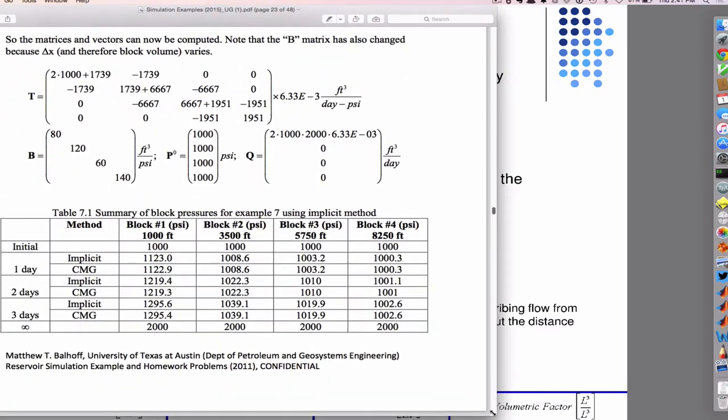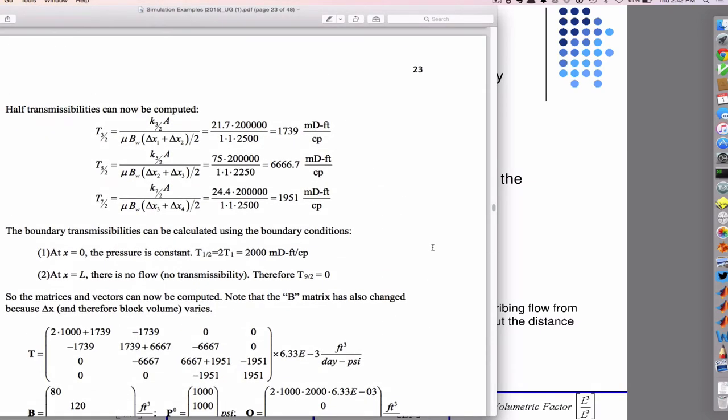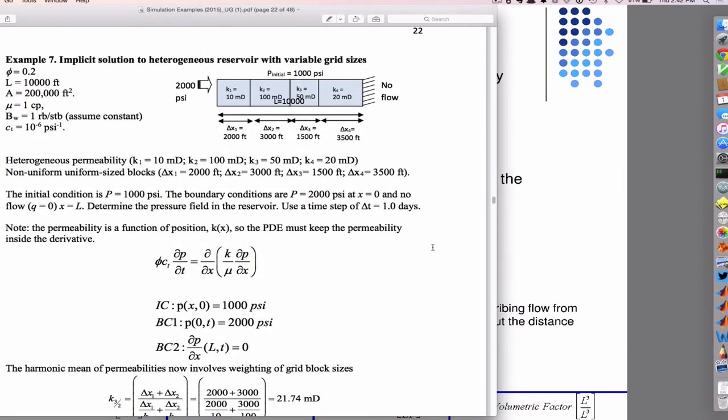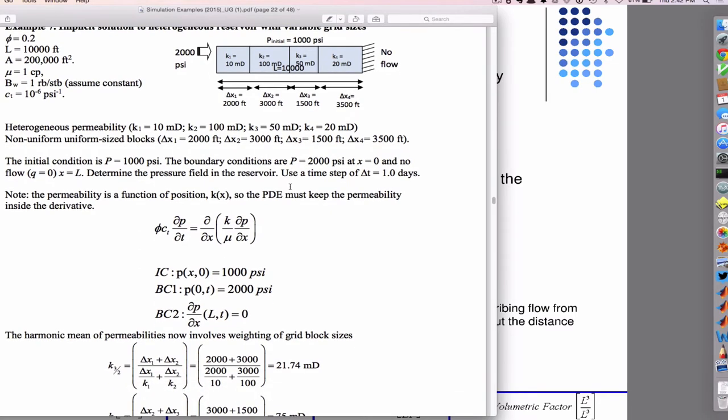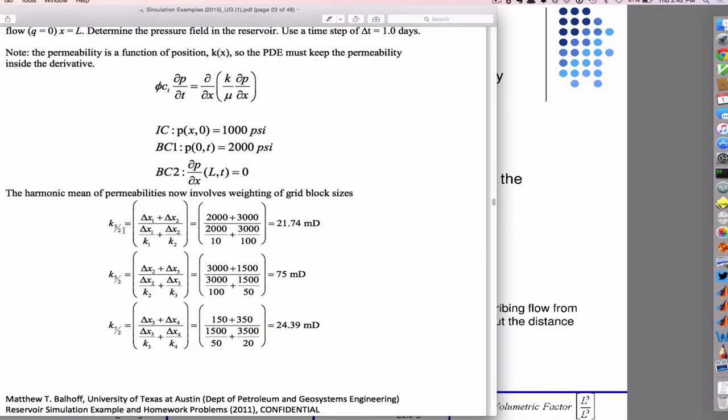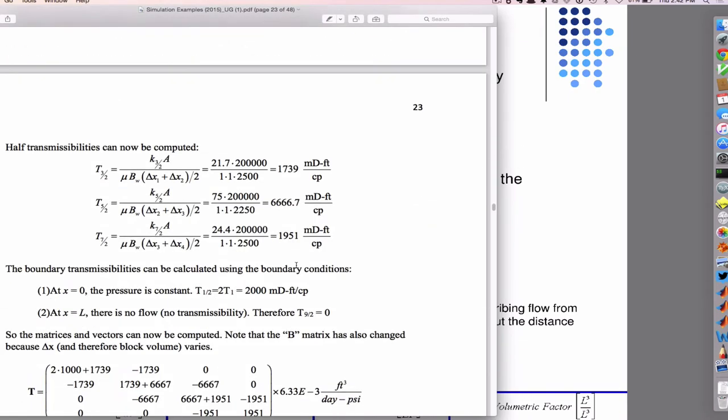So there's an example in the files on Canvas, example number 7, which is an implicit solution to a heterogeneous reservoir with variable grid size and variable permeability. This is just a four grid block system and all the solutions to every permeable boundary are there.